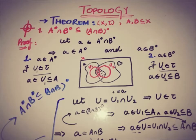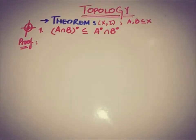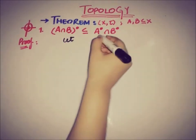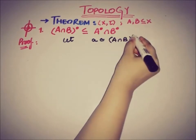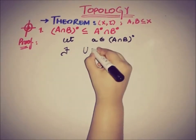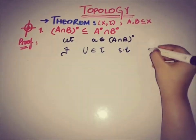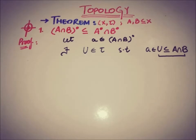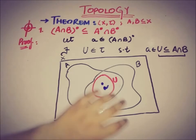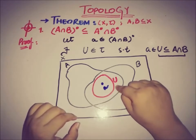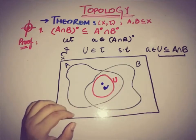Moving to the second part: we need to prove that Int(A ∩ B) is a subset of Int(A) ∩ Int(B). Take a point 'a' from Int(A ∩ B). By definition of an interior point, there exists an open neighborhood U such that 'a' belongs to U and U is a subset of A ∩ B.